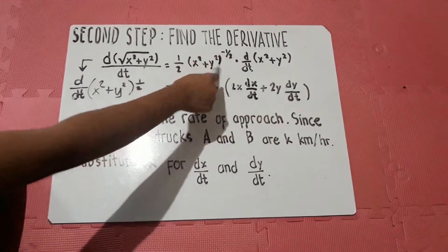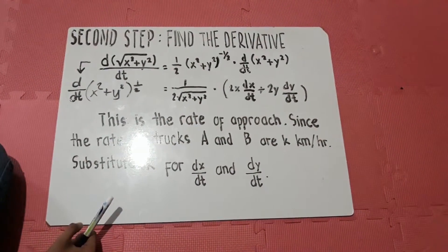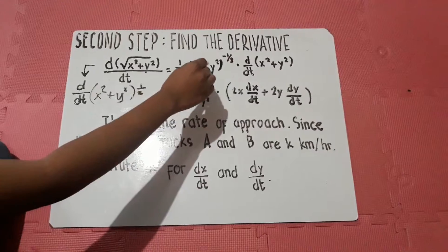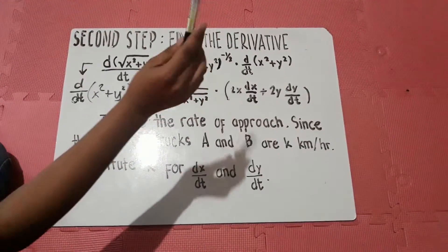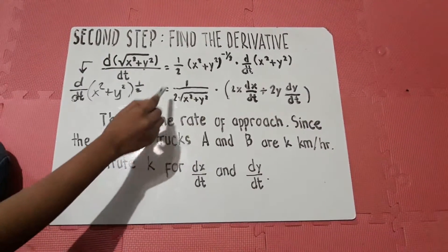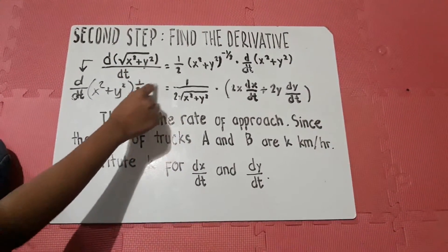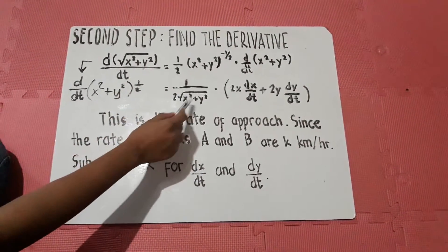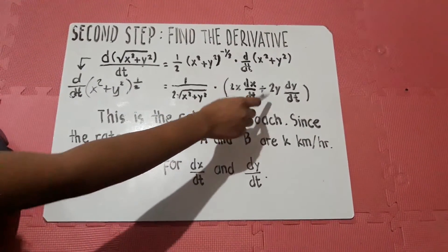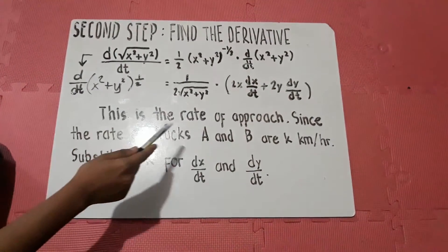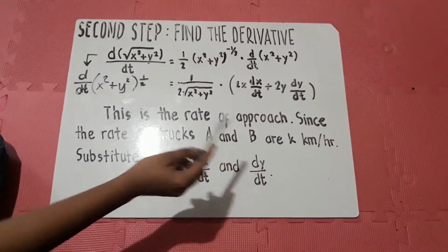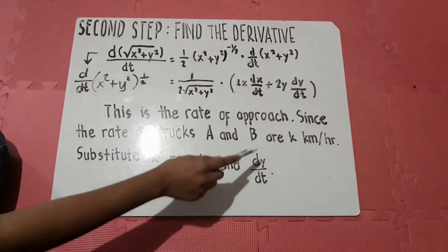Since the power is negative, we need to transform it into a positive power by moving it to the denominator. So we have 1 over 2 times x-squared plus y-squared to the positive one-half, which we transform into square root form: square root of x-squared plus y-squared. The full equation becomes 1 over 2 times the square root of x-squared plus y-squared, multiplied by the quantity 2x dx over dt plus 2y dy over dt. This is the rate of approach. Since the rate of truck A and B are K kilometers per hour, we substitute K for dx over dt and dy over dt.